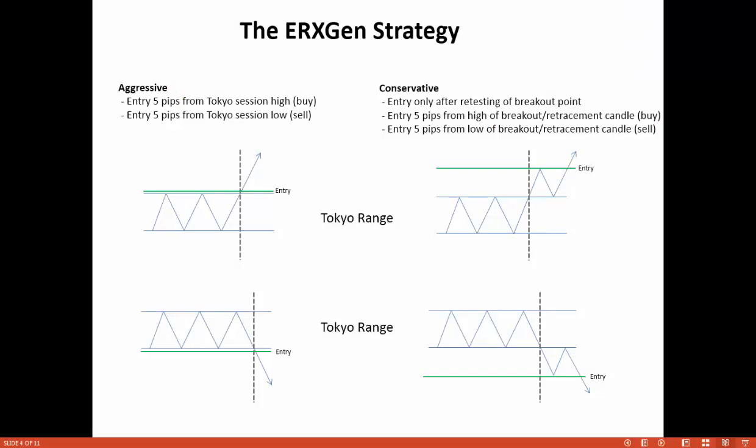There is either an aggressive or conservative method for trading the ERX Gen strategy. With the aggressive method, once price breaks through either the Tokyo high or Tokyo low price, a trade is entered. With the conservative method, once price breaks either the high or low of the Tokyo range, the trader must wait for price to retrace back and retest the breakpoint. An entry point is placed at the high of the breakout or retracement candle — whichever is higher, or lower in the case of a sell trade.